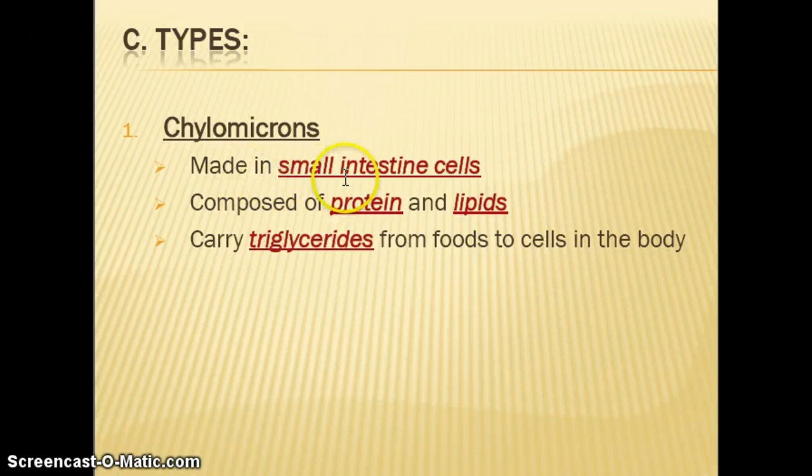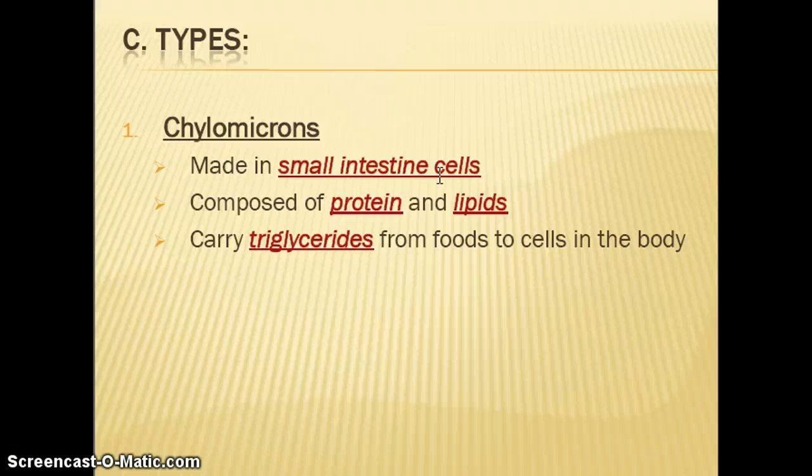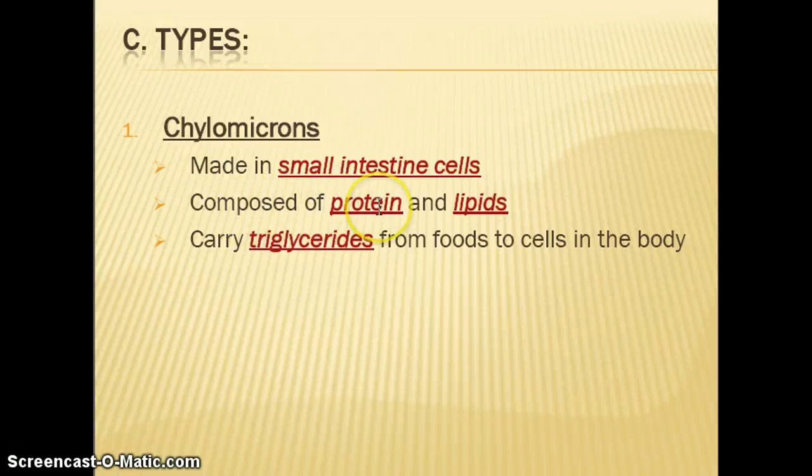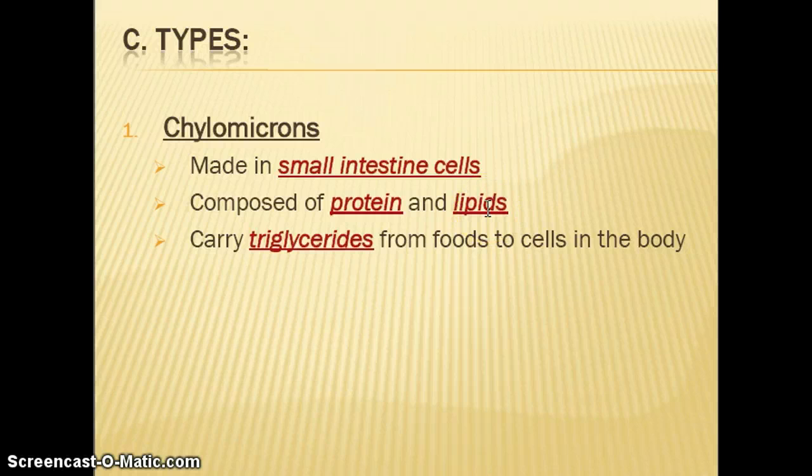These chylomicrons are made in intestinal cells. Again, they're made after eating dietary fat. That fat has been digested, it has been absorbed into intestinal cells, and that fat needs a special carrier to get around in the watery lymph and blood. So going to be composed of protein and the three types of lipids that we just looked at, but it's going to have the largest component of triglycerides since this is the main lipid in our food. And this chylomicron will carry triglycerides from intestinal cells to cells all over the body.